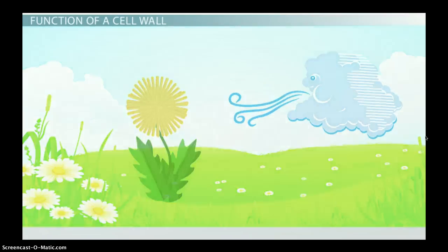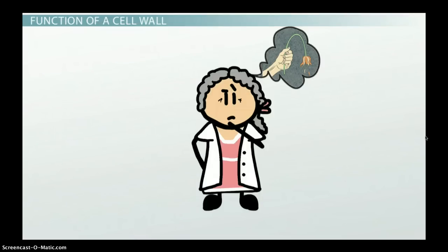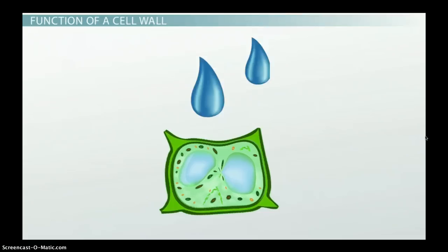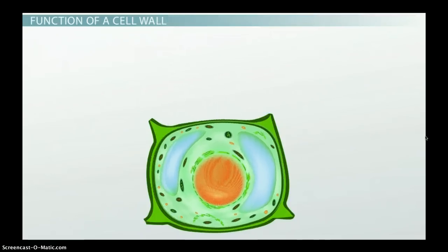Have you ever forgotten to water the flowers? They may not be able to talk, but they will let you know when they're thirsty as they begin to droop over. Their shape is still being maintained by the cell wall so that, as soon as you water the plant, it can pick itself back up again. On the other hand, if you water too much, the cell wall also makes sure that the cell does not burst. It protects the cell from over expansion.